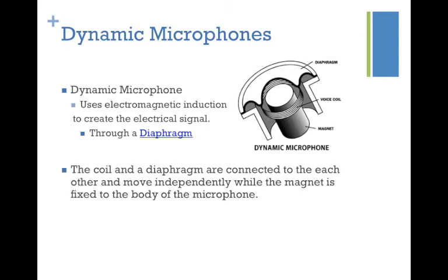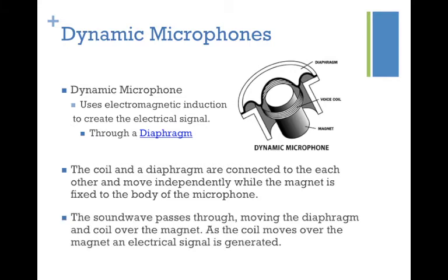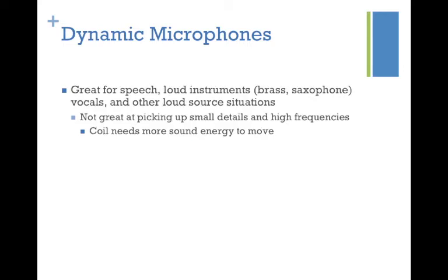The coil and diaphragm can move independently of the magnet, while the magnet stays fixed in one position. As the sound pressure level moves through the diaphragm, it moves the diaphragm and the coil together. That coil hovers over the magnet, and as it moves, a very small electrical signal is generated because the magnet and coil have a different charge. That small electrical charge is then transmitted out through the XLR cable to whatever comes next.